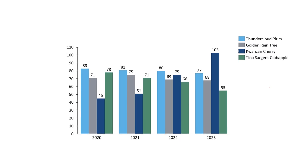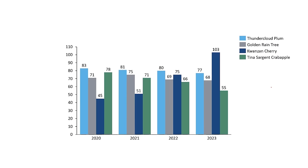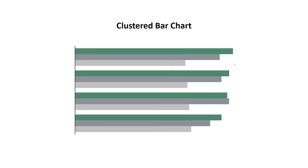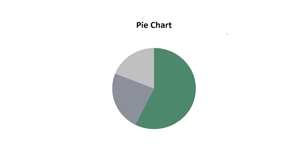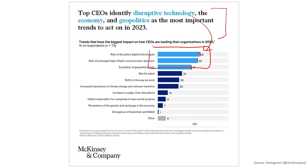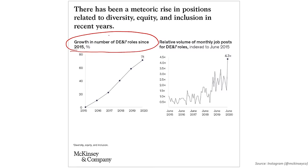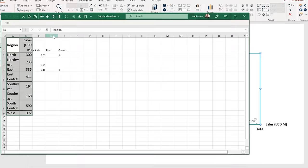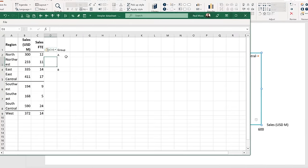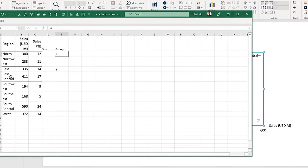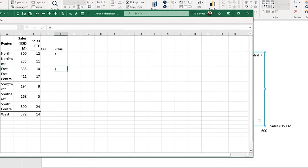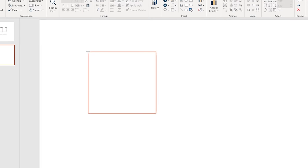In this crash course, I'm going to teach you data visualization skills found at places like McKinsey, Bain, and BCG. You'll learn about choosing the right chart type every single time and why it really matters for your message. Then I'll teach you my best tips for chart design, and at the end we'll do a complete exercise together — I'll go through every step from raw data to finished chart.